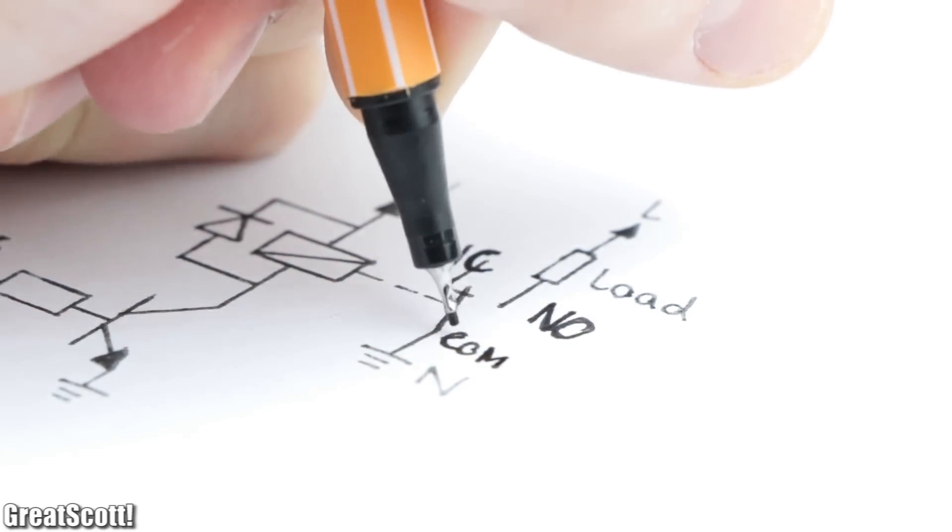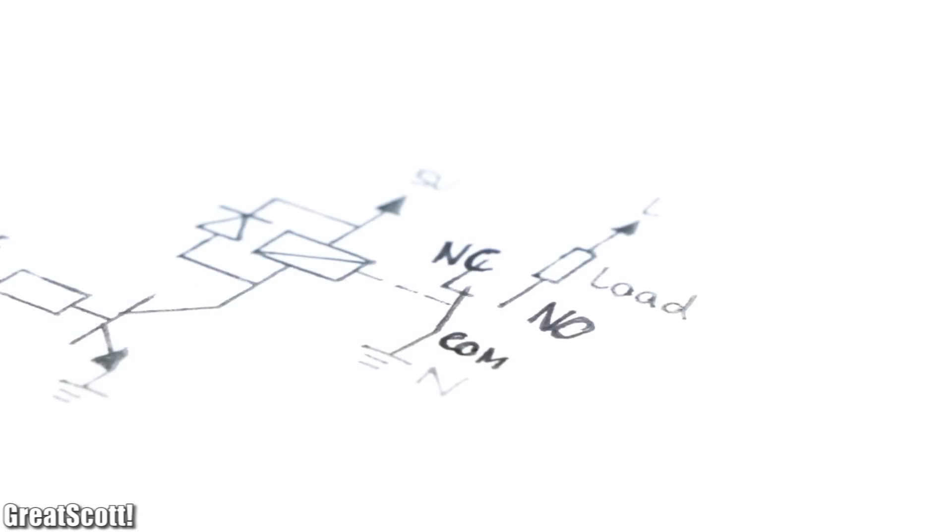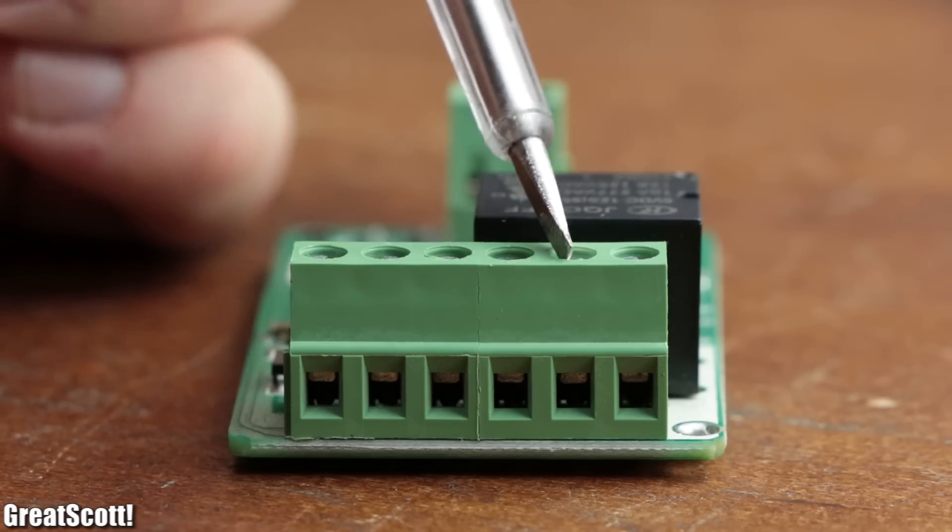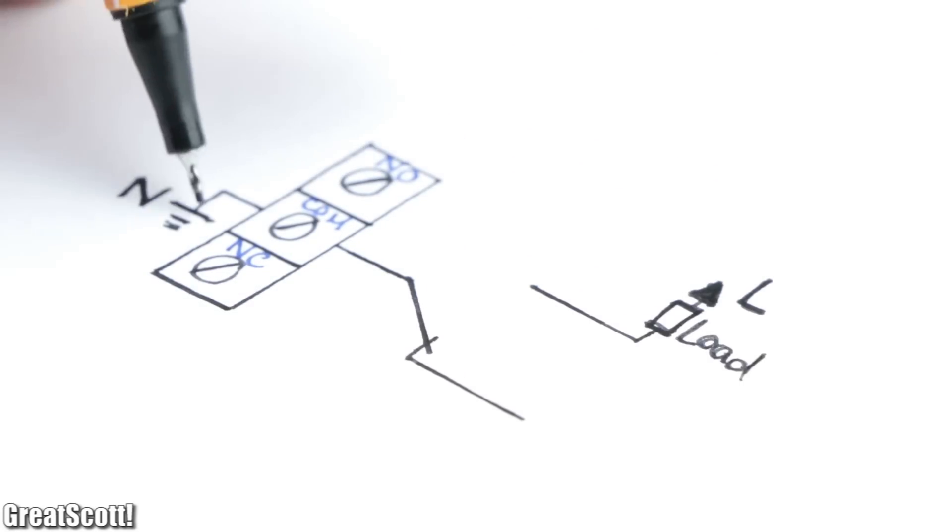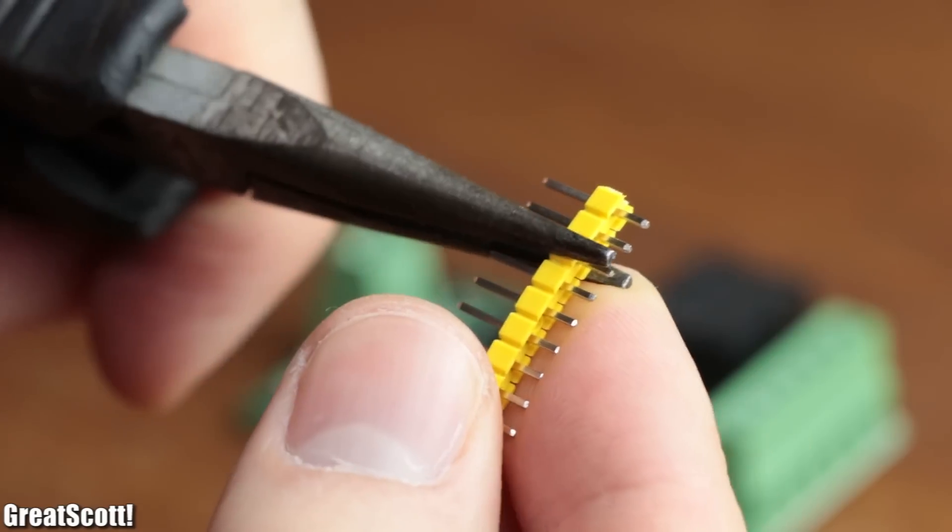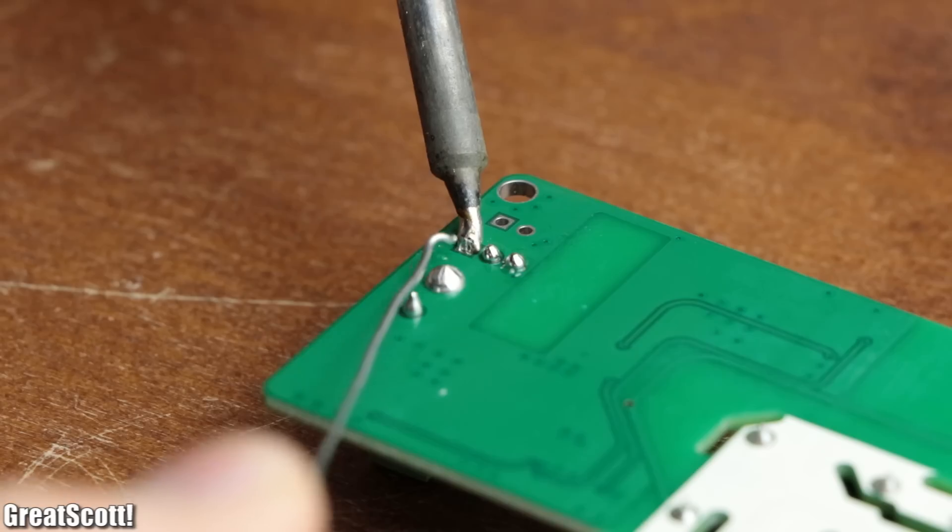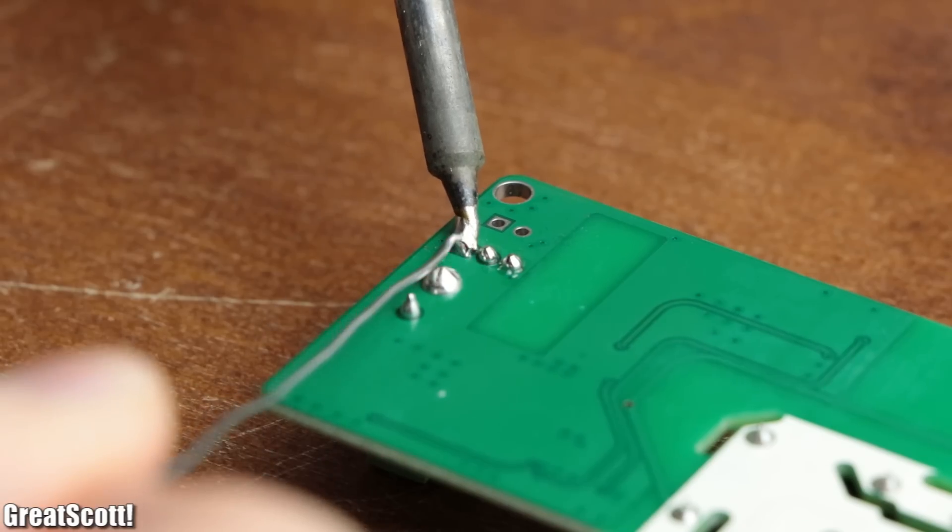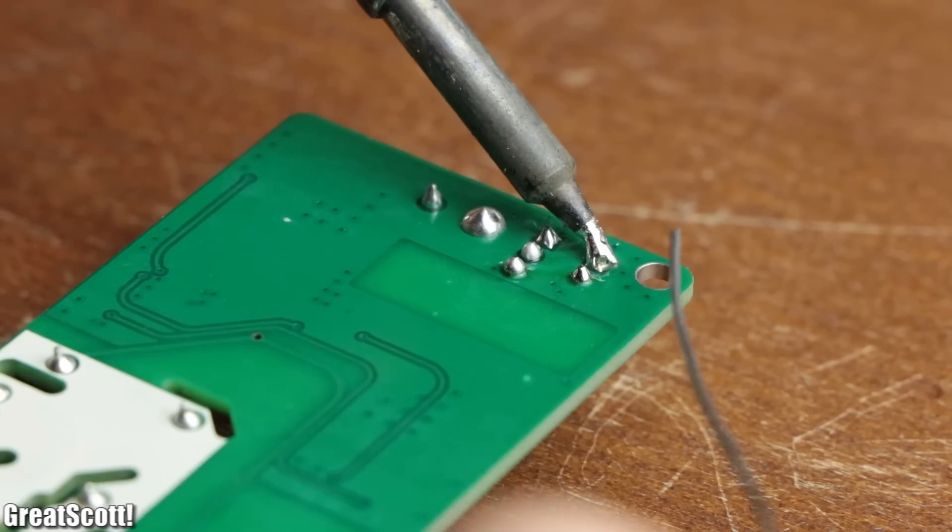This way the changeover contacts of the relay, which are connected to the upper three PCB terminals, can be used to connect our appliance to mains voltage. To reprogram the microcontroller though, I soldered male headers to all the five solder pads in the down left corner of the PCB.